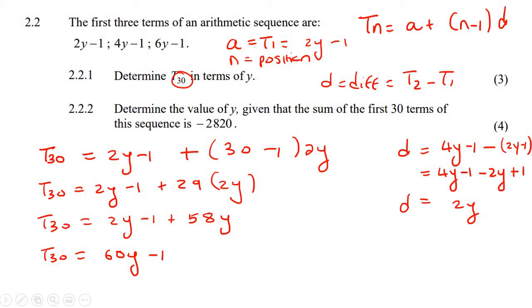The next question says, determine the value of y if the sum of the first 30 terms is minus 2,820. All right, so here's the sum formula of an arithmetic pattern. So let's go fill this all in.